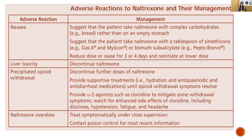For nausea management, suggest the patient take naltrexone with a complex carbohydrate — bread or roti — rather than on an empty stomach. Discontinue naltrexone if precipitated opioid withdrawal occurs. As mentioned in the chronic pain syndrome context, if a patient is taking any opioid for any reason, avoid naltrexone because it will precipitate severe opioid withdrawal with features like muscle ache, rhinorrhea, salivation, and diarrhea. For naltrexone overdose, treat symptomatically under close supervision, monitoring and managing airway, breathing, and circulation.